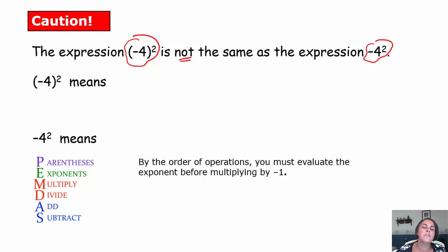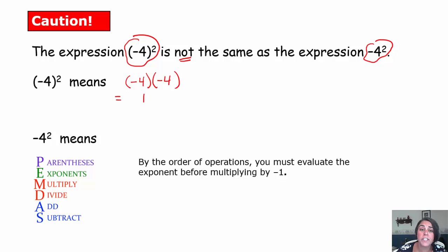We've worked with a base of negative 4 raised to the second power for a few nights now. Negative 4 raised to the second power is just negative 4 times negative 4. Negative times a negative is a positive; 4 times 4 is 16. So negative 4, that base raised to the second power, is a positive 16 because it means we're going to take negative 4 and multiply it by itself 2 times.